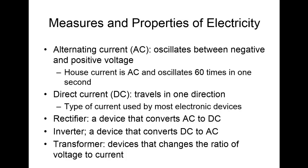Your power supply steps down the voltage coming in from the house at 115 volts and converts it down to 3.3, 5, and 12 volts that the computer components are going to be able to use. When we talk about amps, an amp is a measure of electrical current — symbolized with a capital A. For example, an LCD monitor requires about 5 amps to operate, a laser pointer uses about 2 amps, and a CD-ROM in a computer takes about 1 amp.